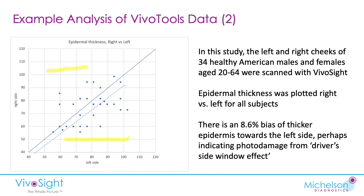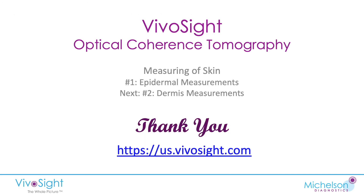This is just a couple of examples of where we've used the VivaTools to extract data from scans and plotted them to produce results. There's a lot of potential for tracking the results of treatments and seeing the effects on the epidermis and other parameters. That's the end of my talk on using VivaCite OCT to make measurements of the epidermis. In my next talk, I'm going to discuss making measurements of the dermis and the relation of these measurements to collagen content. Thank you very much for listening.